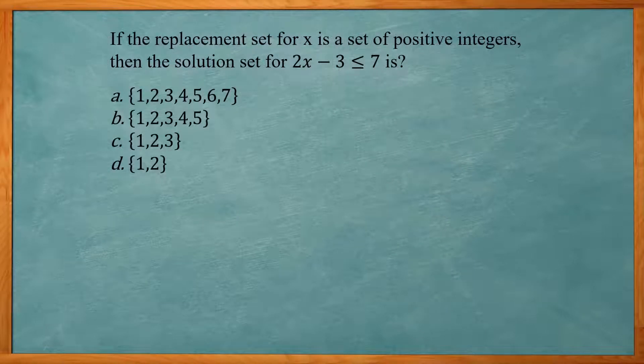So this one says if the replacement set for X is a set of positive integers, then the solution set for 2X minus 3 is less than or equal to 7. This deals with inequalities. Our goal here is get the X by itself. So we know what values of X are sufficient for the answer.